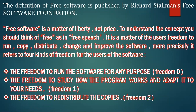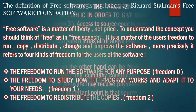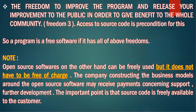Freedom two is the freedom to redistribute the copies — suppose you create a version of the software. Freedom three is the freedom to improve the program and release the improvement to give benefit to the community. I use the software, I make some modifications, I release the latest version to the public so that everybody gets the benefit. What terms and conditions were applied on the original version shall be the same on the next released version.